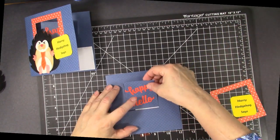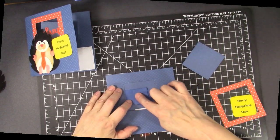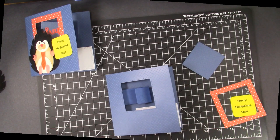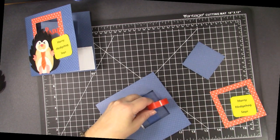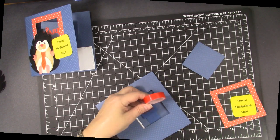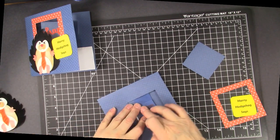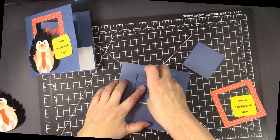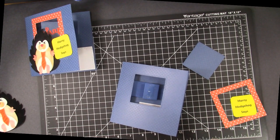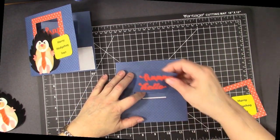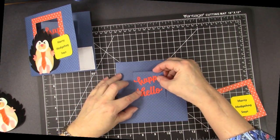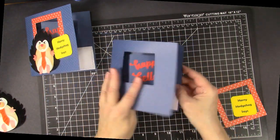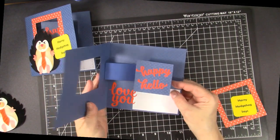Then I'm going to attach this Happy Hello to this piece here with some more good strong tape. And I like to do it right in the window so you know it's going exactly where you want it to go. And our Happy Hello greeting is going to pop up and go to the side every time it's opened.